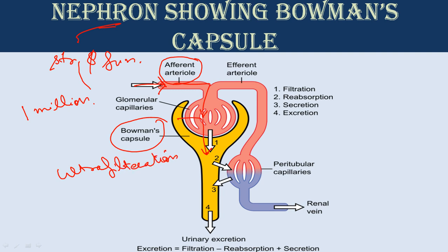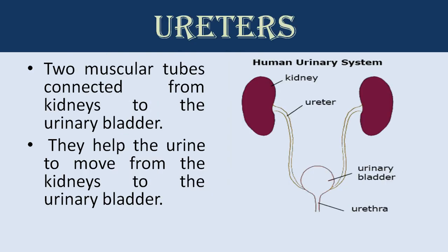Blood exits into the paired renal veins. Peritubular capillaries are also present, surrounding the nephron, so substances can be taken in and out of the blood. There are two ureters in the human body — the right ureter and the left ureter — which are two muscular tubes that connect the kidneys to the urinary bladder.